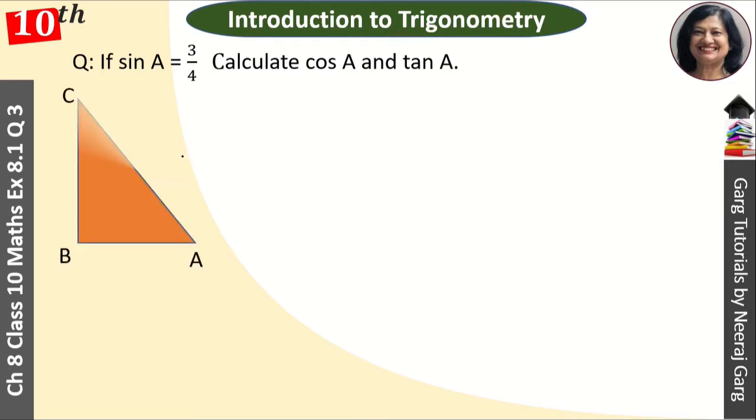First of all, we will make a triangle. We have made a triangle ABC. Make sure that the triangle is a right triangle, so this angle is 90 degrees. And we are given that sin A is equal to 3 by 4.